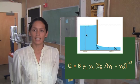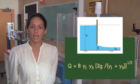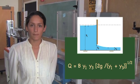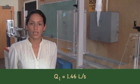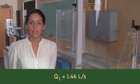Now we apply the theoretical formula in terms of the upstream depth Y1 and downstream depth Y3. The discharge is 1.46 liters per second.